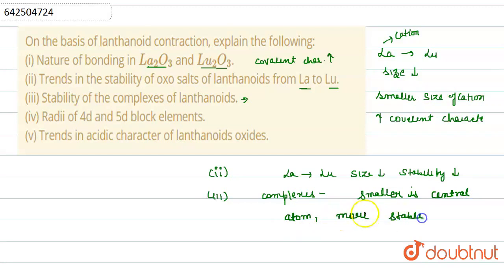Okay, so as we move down the group, we know size decreases. That's why we can say that stability of the complex increases.